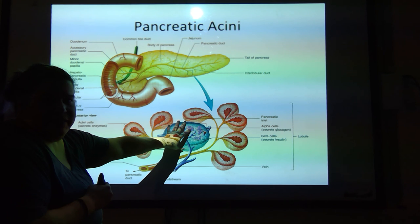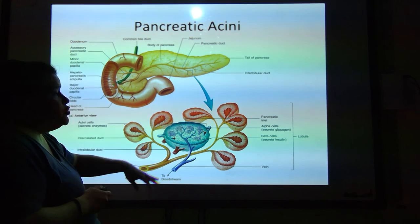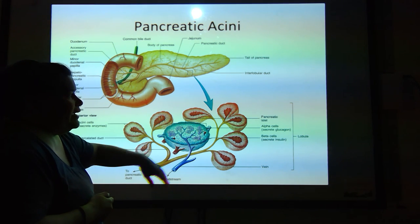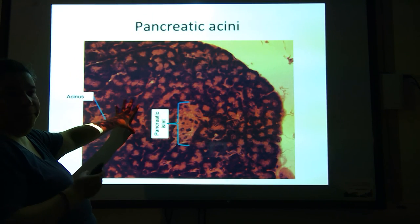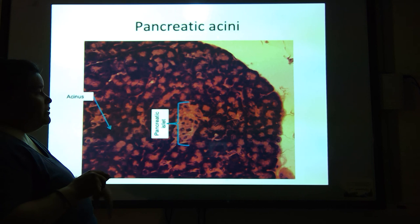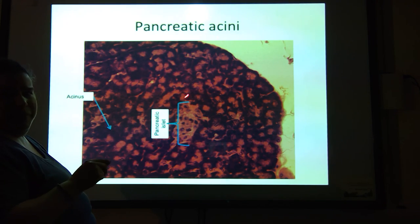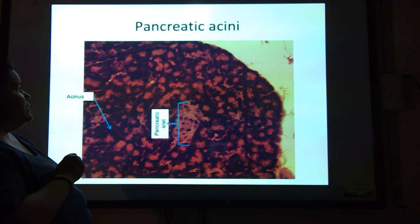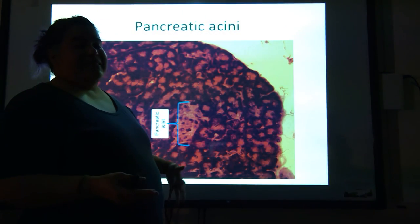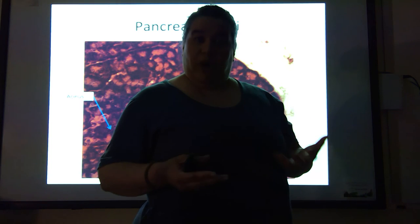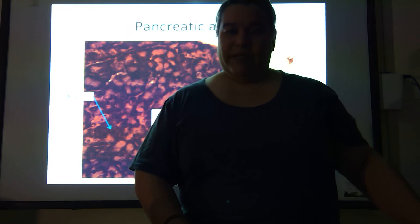You also know that this is the pancreatic islet, because you learn that for the endocrine system. We've got these acinar cells and the pancreatic islet. When you look at a picture of the pancreas, you can still see the pancreatic islet, but all of these purple cells are the acinar cells that are producing those digestive enzymes that help us to actually process our food. So that's the last of the digestive system lecture.